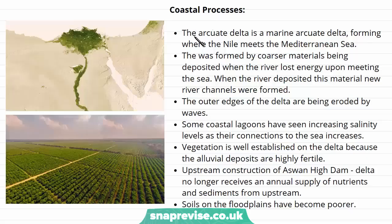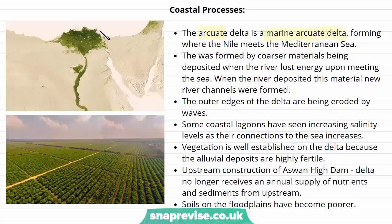As I mentioned earlier, the Nile Delta is an arcuate delta, and it's a marine arcuate delta. This means it enters into a marine coastline, and it forms where the Nile meets the Mediterranean Sea. The delta was formed when coarser materials being carried by the river were deposited in this delta area when the river lost its energy upon meeting the sea. When it meets the sea, the river slows down and can't carry as much material anymore, so the coarser material is deposited first, and then the finer sediments are deposited further out towards the sea.